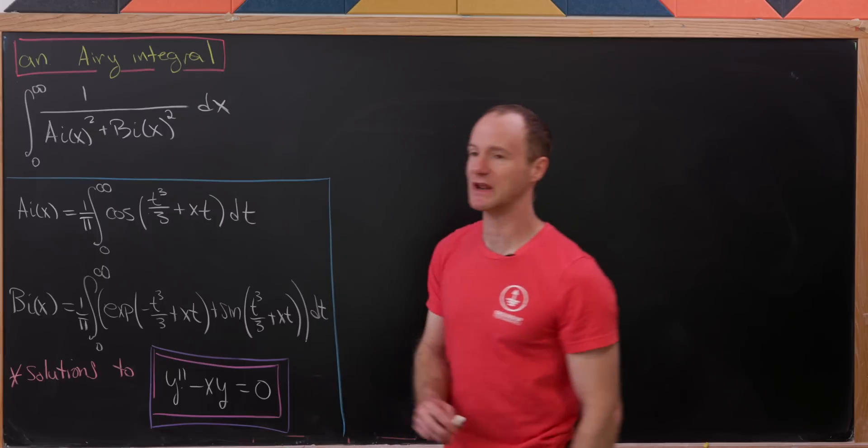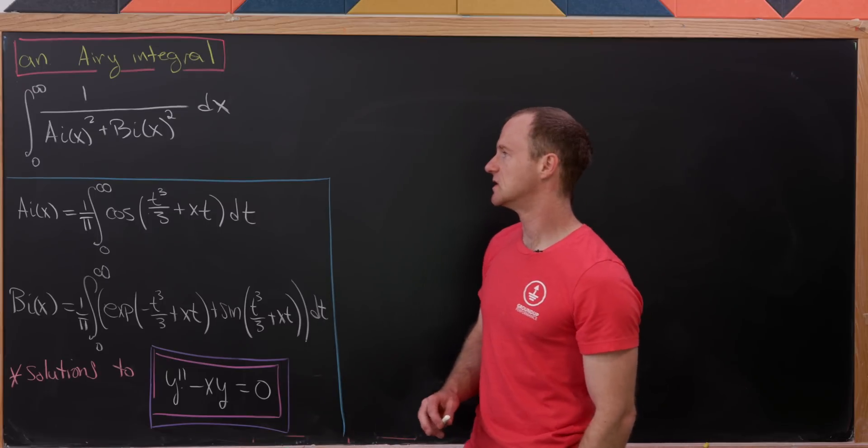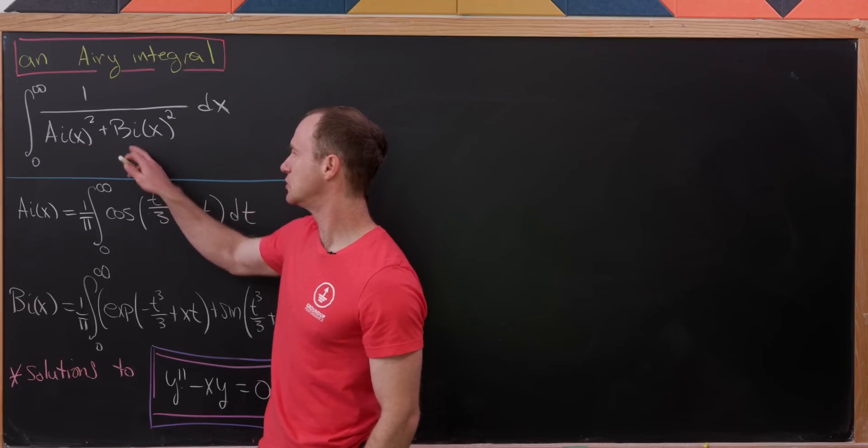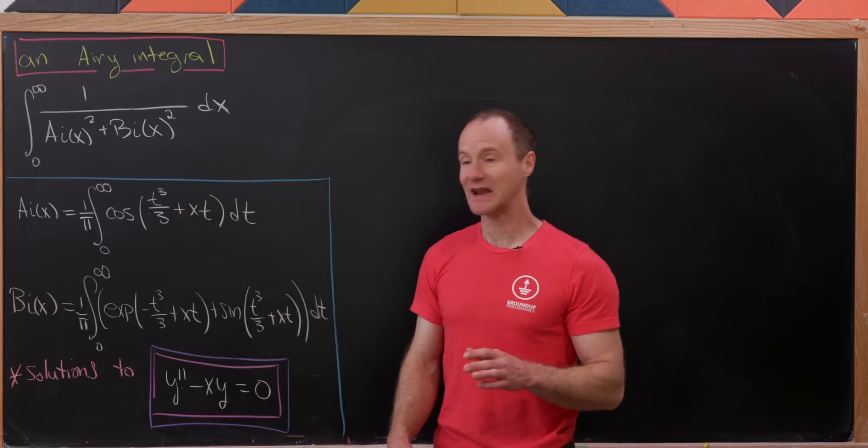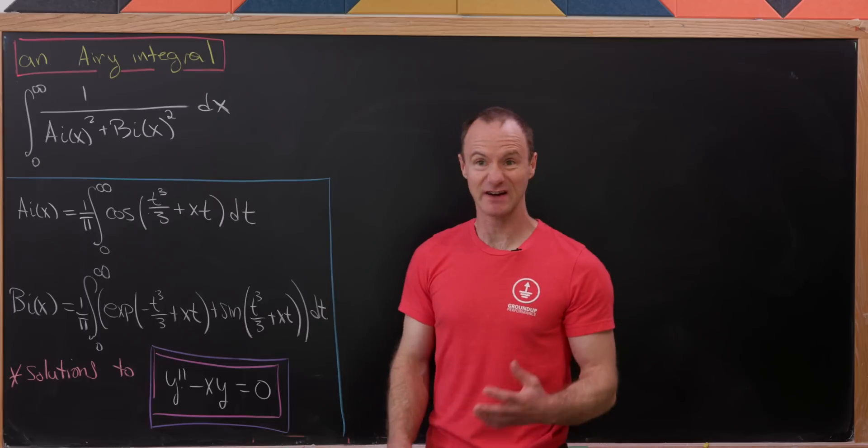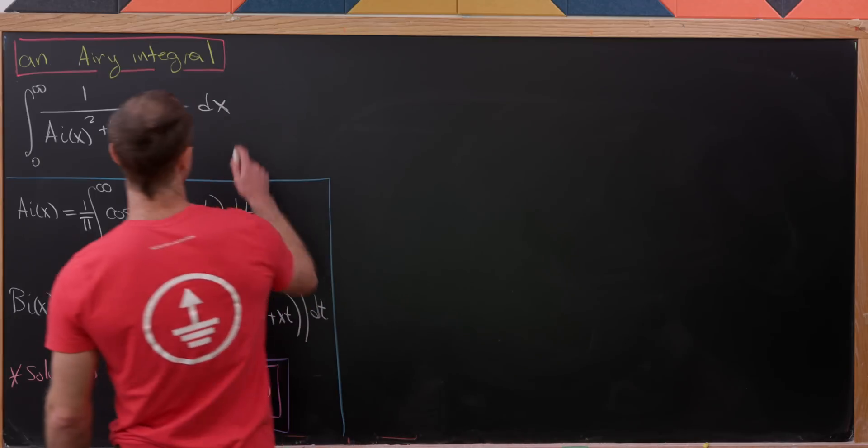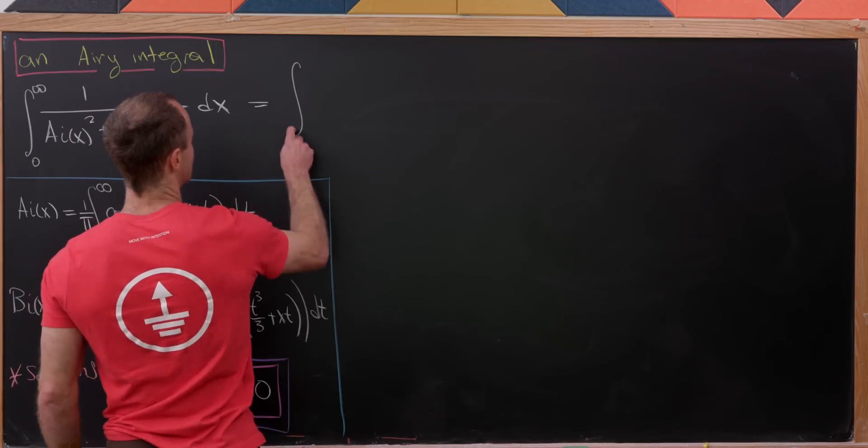I'd like to make the denominator a little bit easier. So instead of having two functions squared, I could have a single function squared. And I can get there by factoring a BI squared out of the denominator.